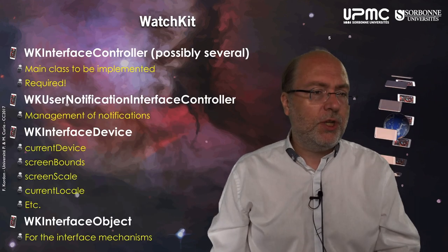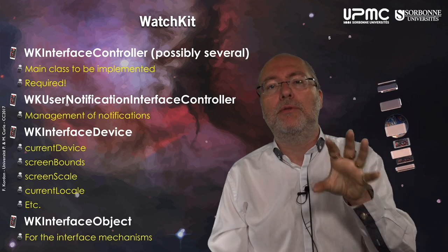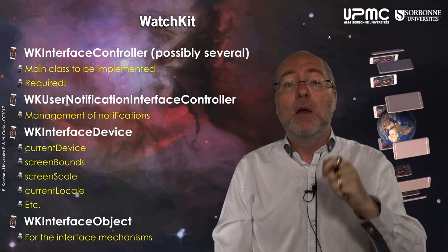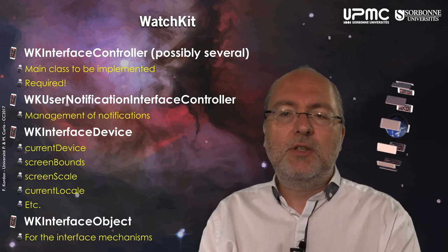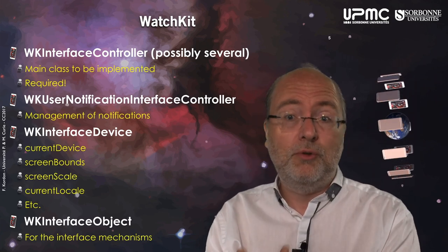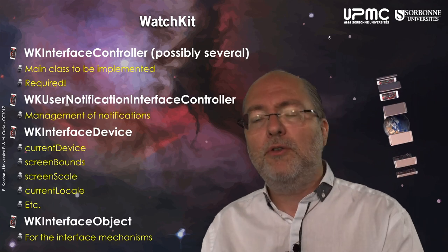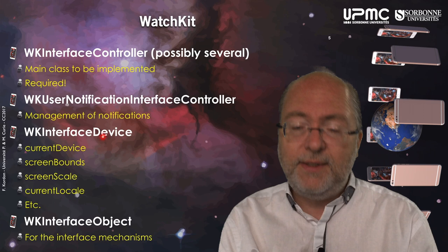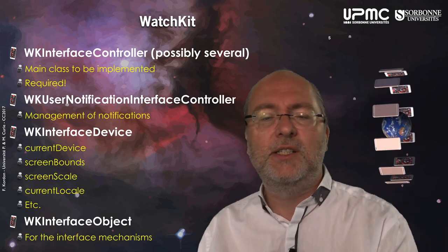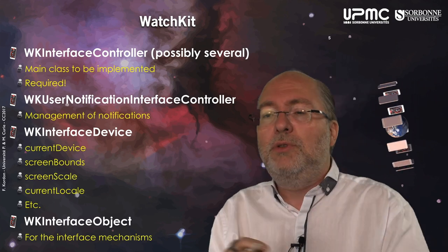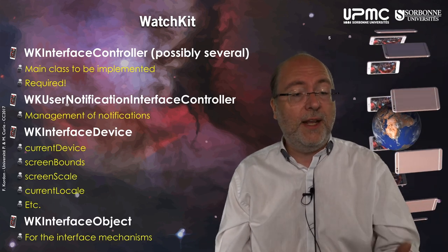What do you have in WatchKit? First, you have WKInterfaceController — you may have several. At least one is associated to the main entry point, which is required. You may have several to handle different parts of your application. This component is the WatchKit equivalent of UIViewController. You also have WKUserNotificationInterfaceController for managing notifications, and WKInterfaceDevice — similar to UIDevice — which gives you information about the current device such as screen bounds, screen scale, and current location, helping you determine whether you are on a large or small watch.